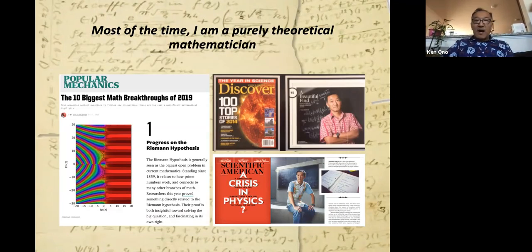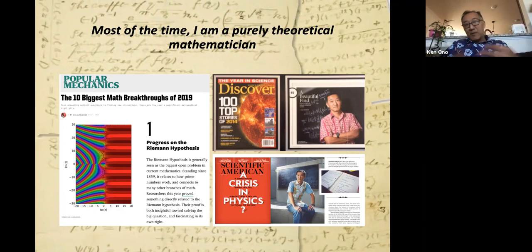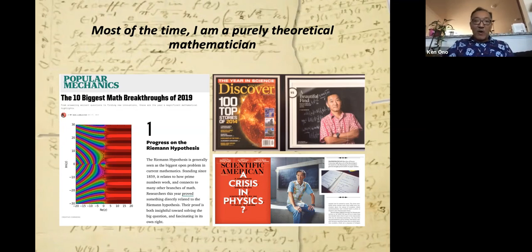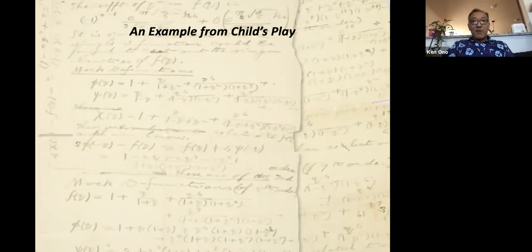Most of the time, I am a pure mathematician, and so I've proven theorems about the Riemann hypothesis. I proved that most of the Riemann hypothesis is true. If this famous math problem is false, this problem has a one million dollar bounty, I will be very disappointed, but as a pure mathematician, I aim for some of these long-standing open problems, and from time to time we're able to whittle away at them and make some small progress.